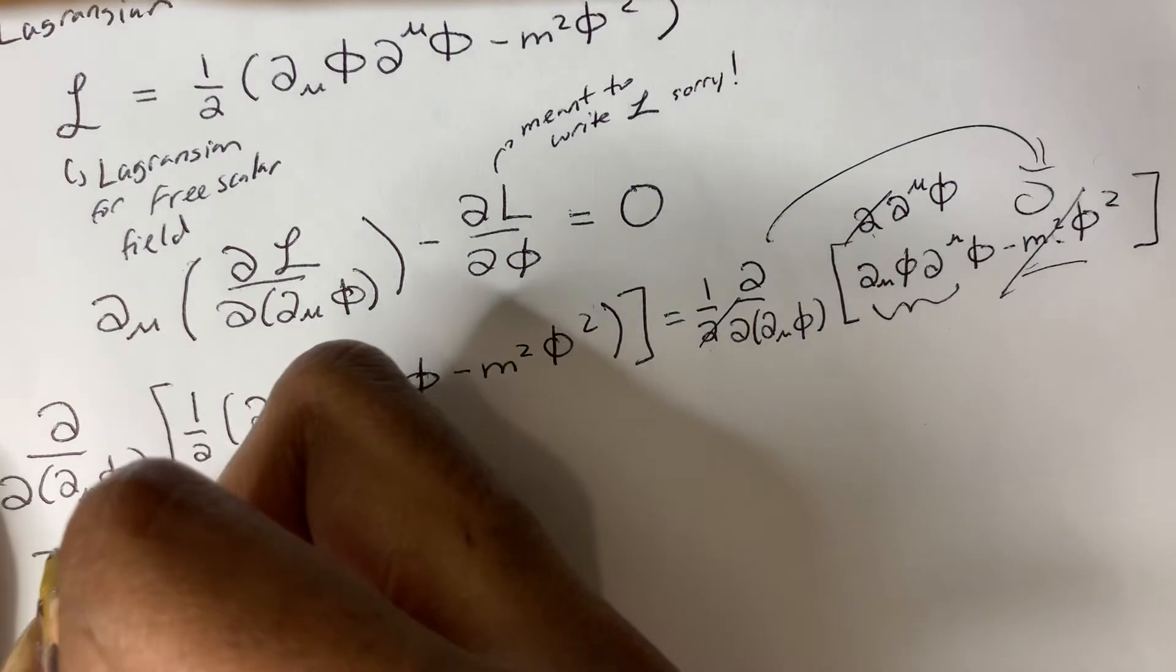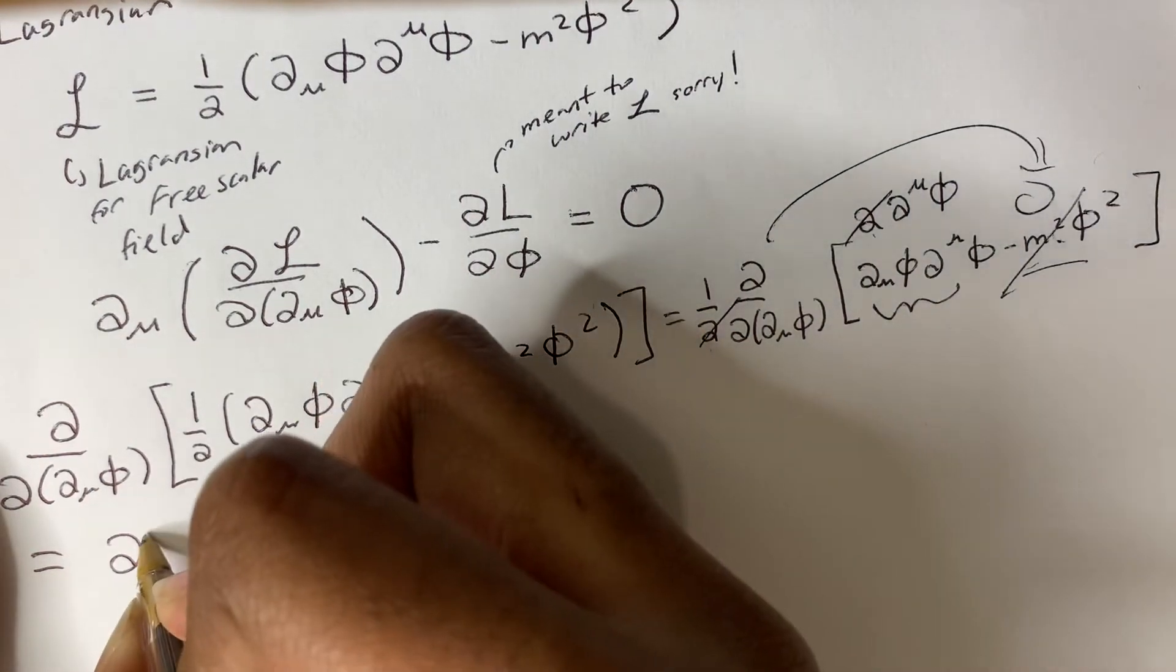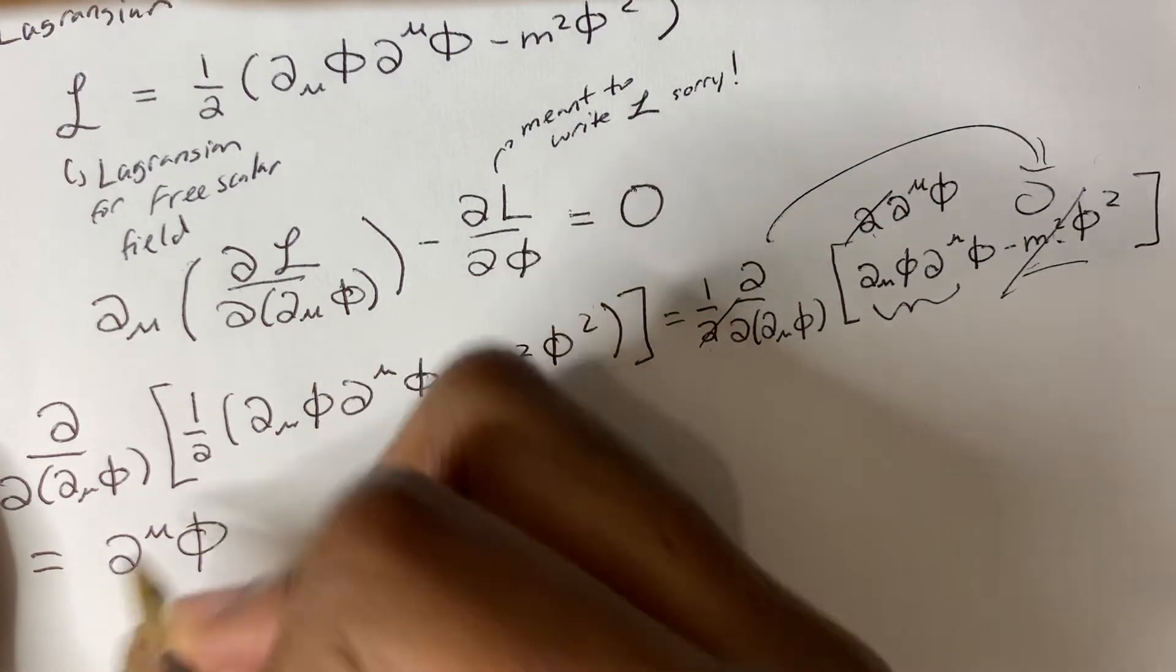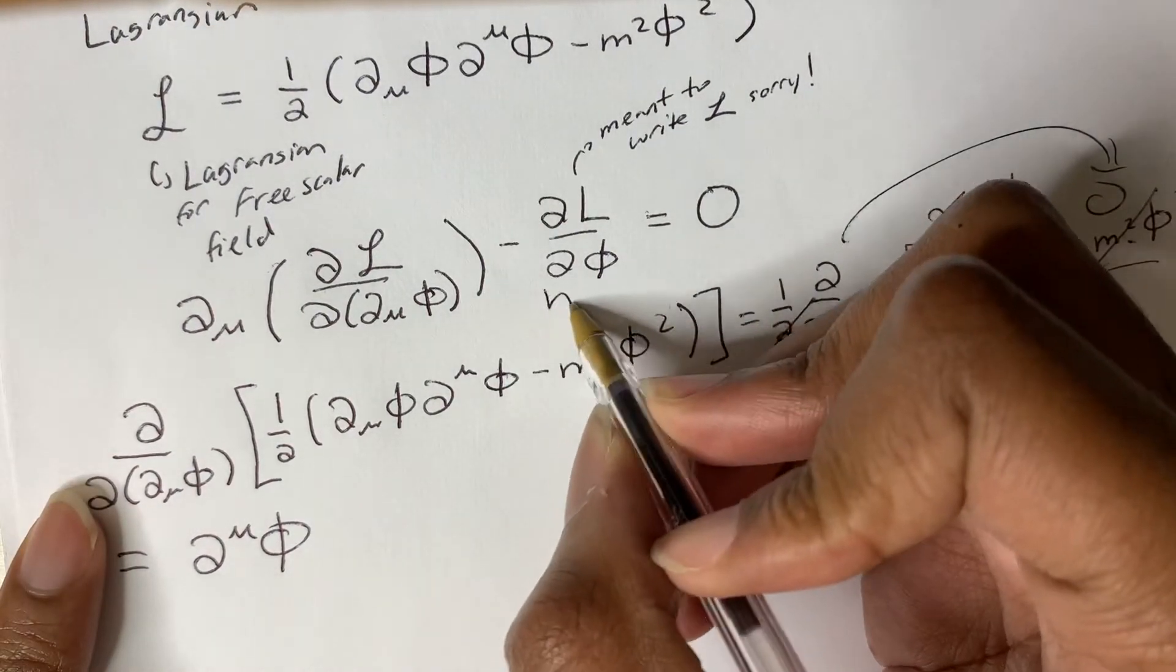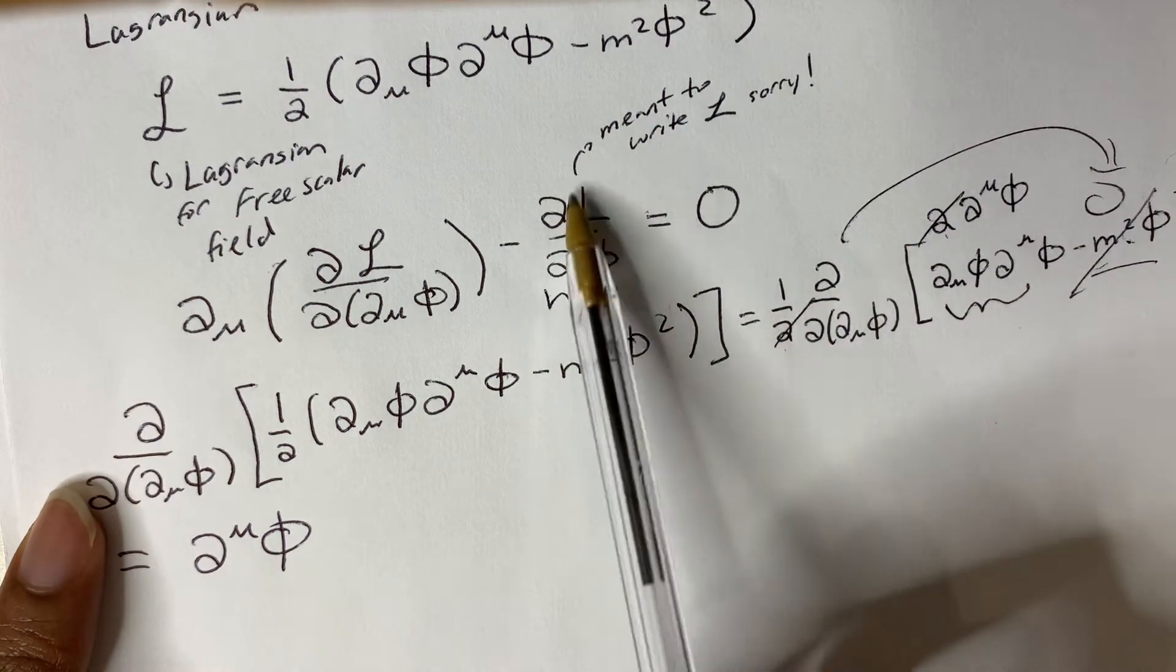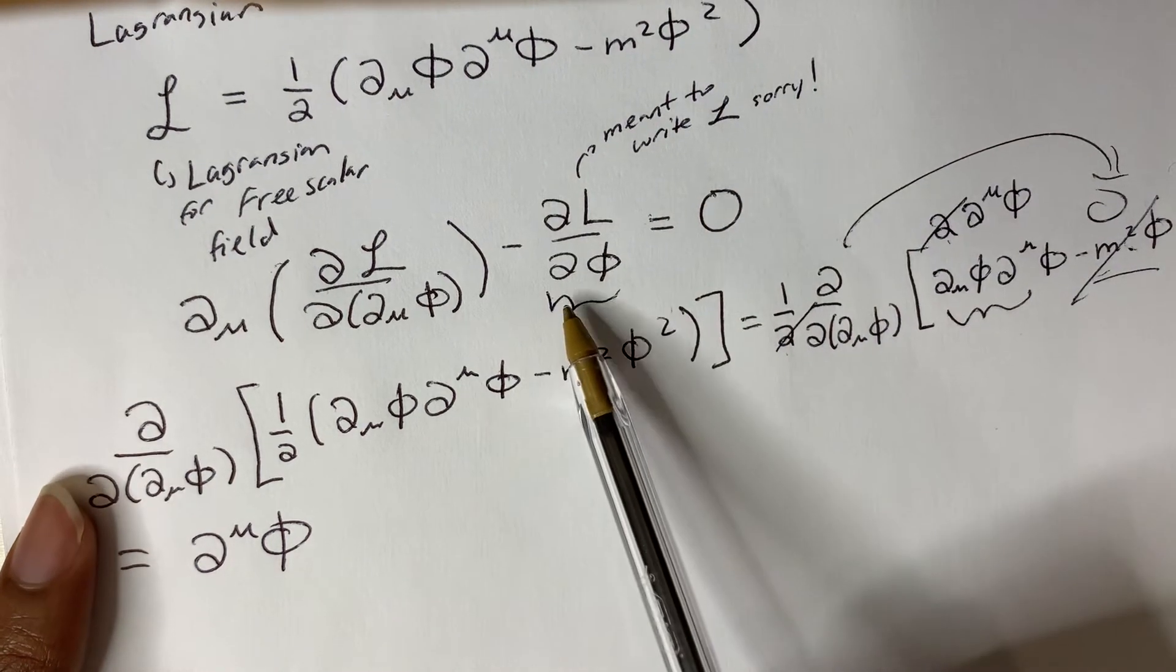And this 2 would cancel out with this 2 over here. So our answer is partial mu phi. So now we have to find the partial derivative of the Lagrangian density with respect to phi.